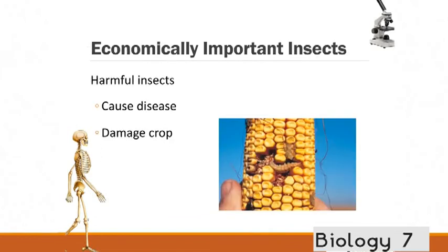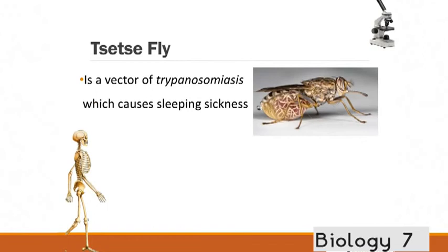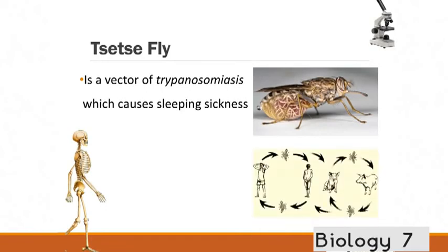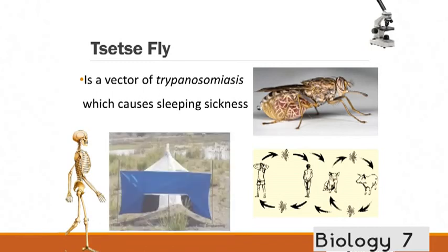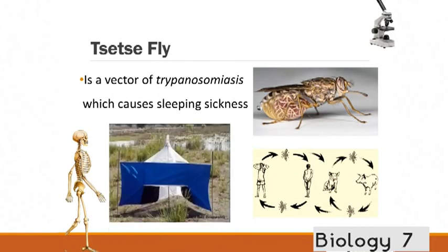And one example of a not so good insect is the tsetse fly. So it's a vector of a disease called trypanosomiasis. This is something that actually causes a bad sleeping sickness. It can actually be contagious and spread this disease through this fly which will then transfer from animals to humans. And in some places it's really crucial to set up these barricades against them.